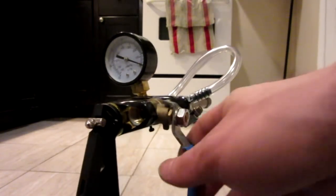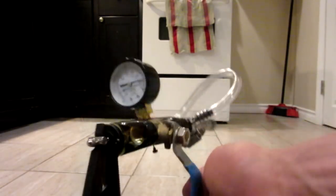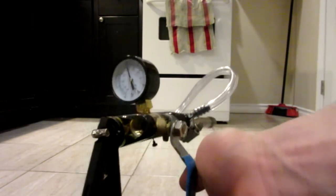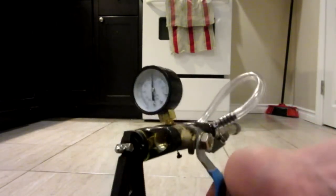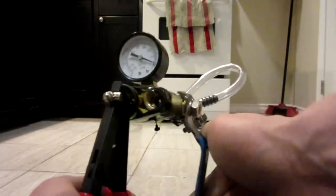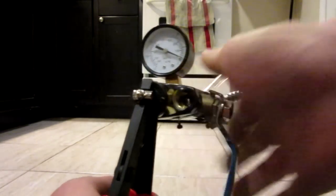Here we go, vacuum gun shooting test number one. Alright, there's about 20 psi vacuum, and now I'm going to open the trigger. Nothing happened, so let's try again.